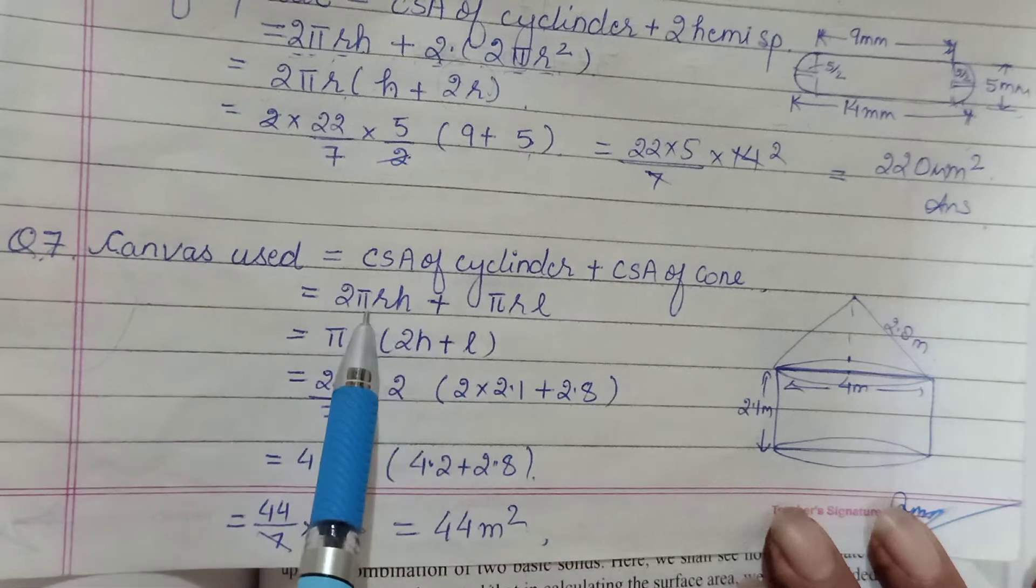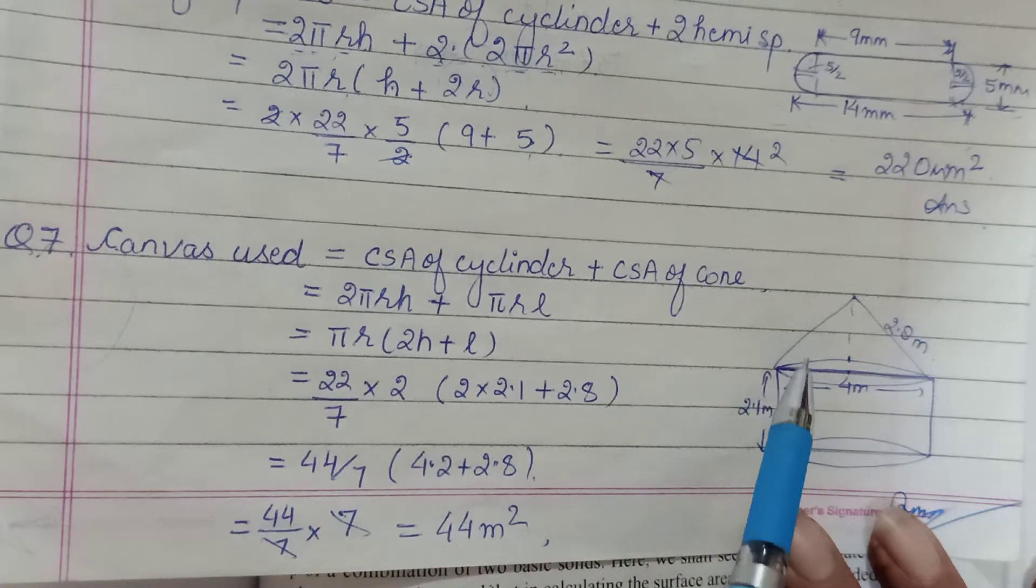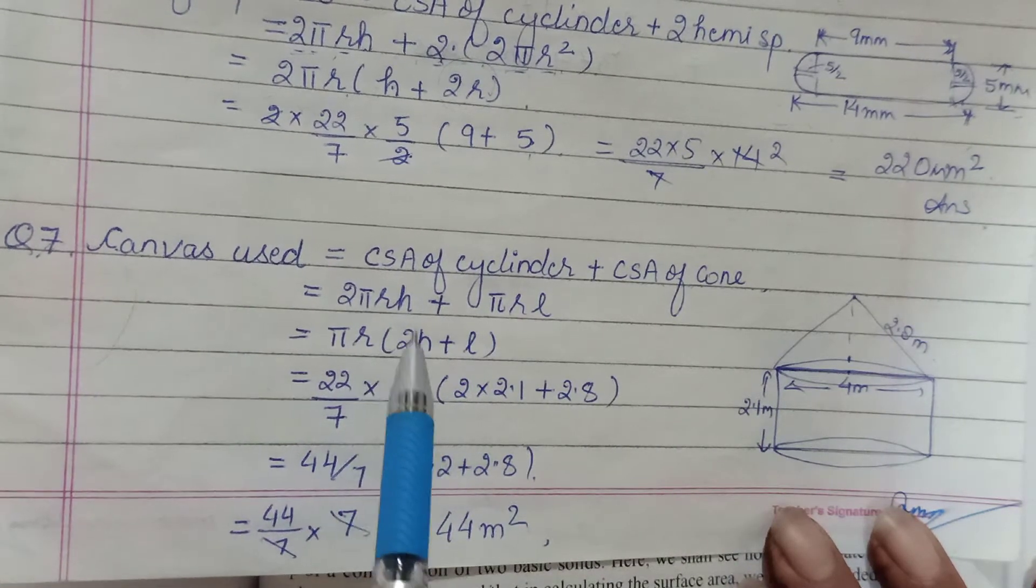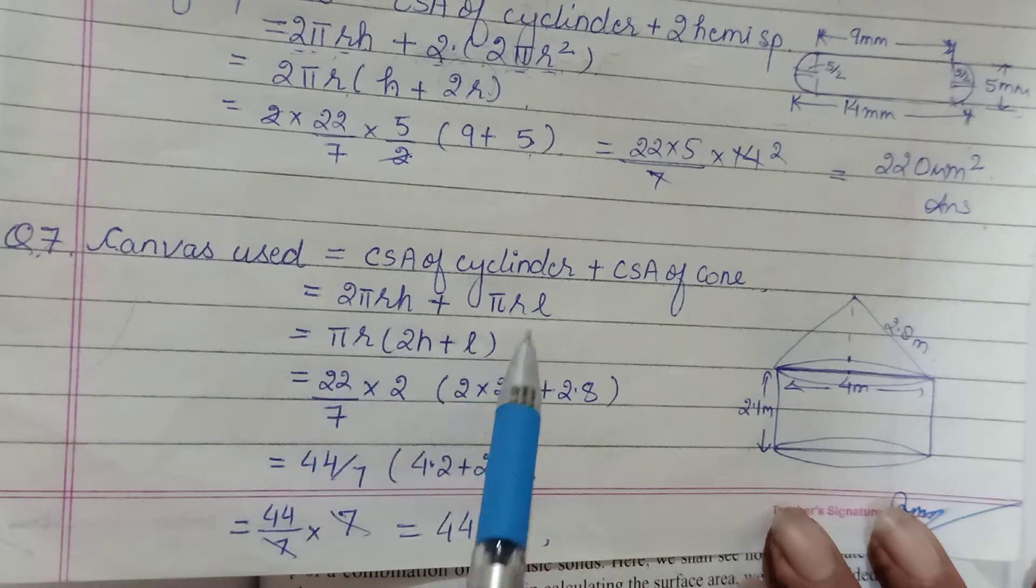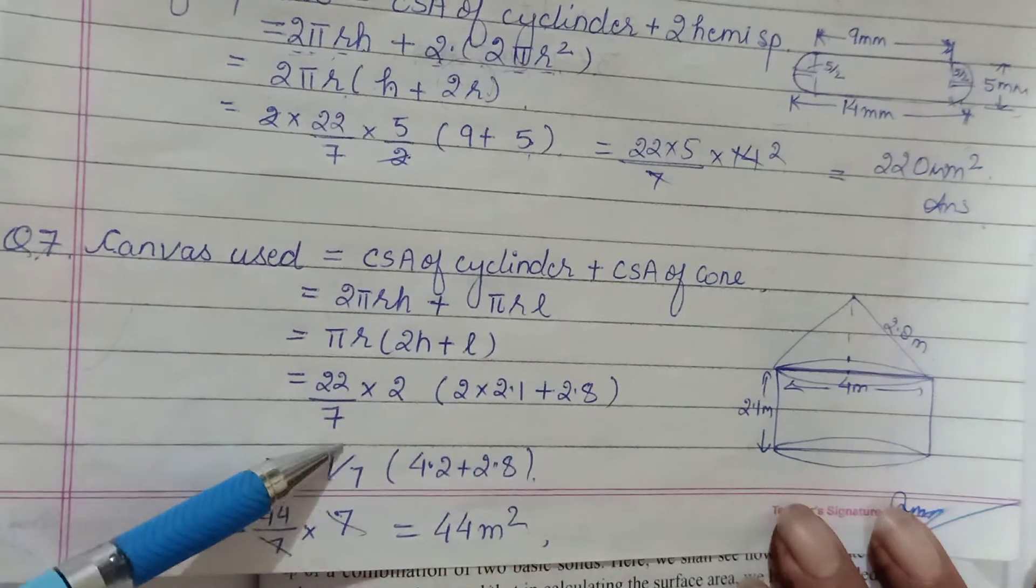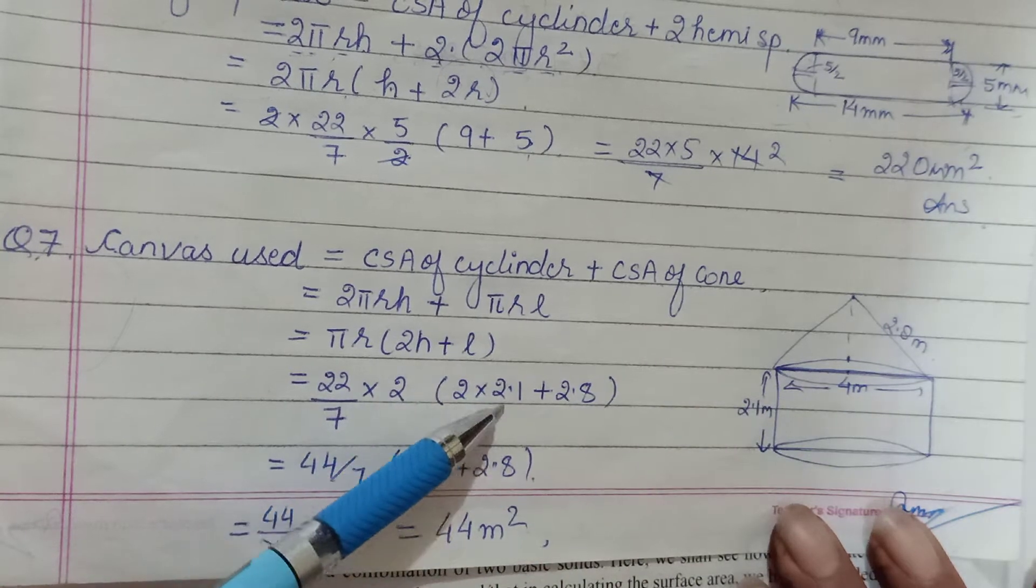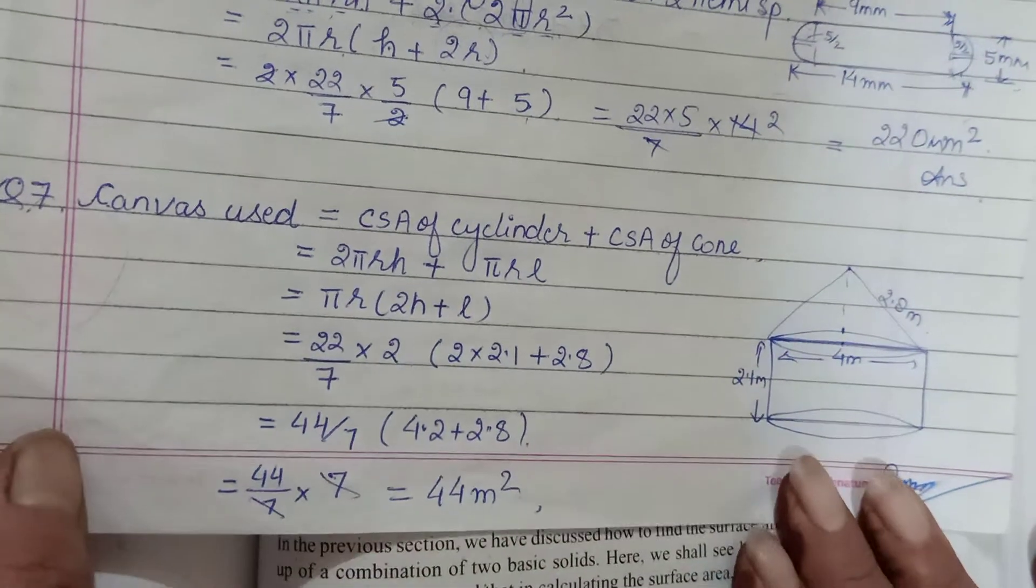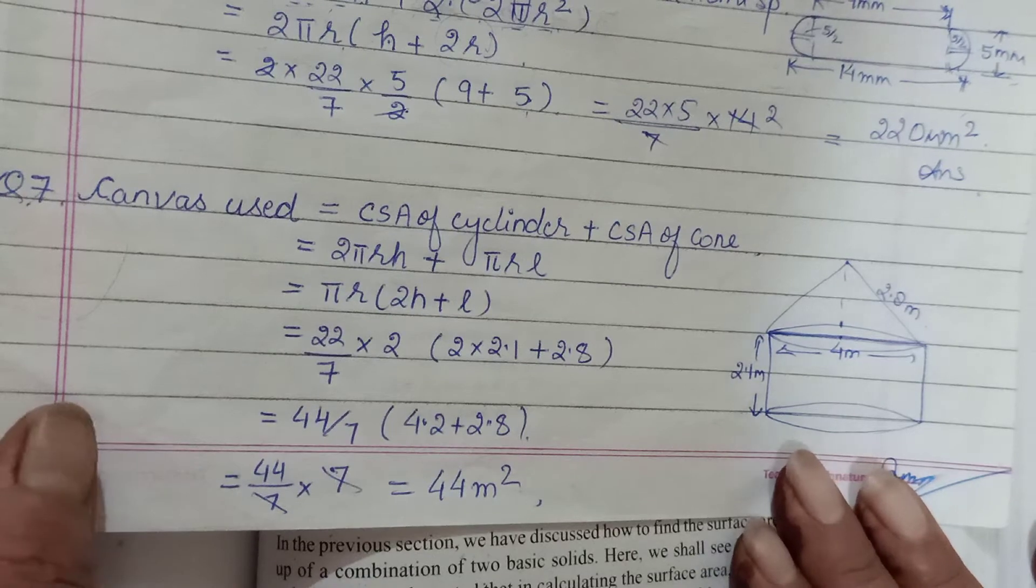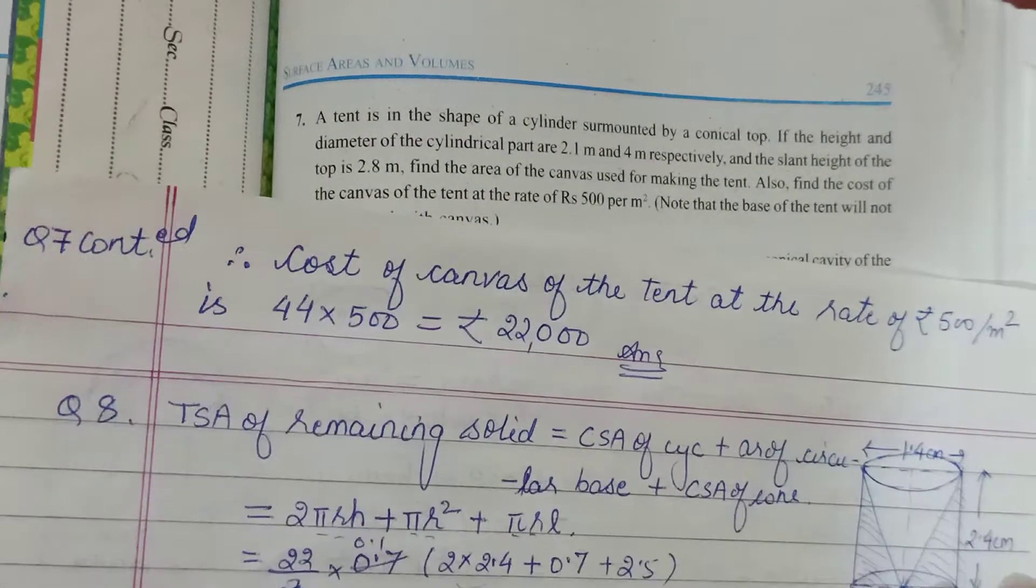Since π and r can be taken common - radius of both the figures was same - so you are left with 2h here and plus l here. Putting the values, radius would be 2, diameter 4 given. The calculation, try on your own and finish it off. So this was only regarding the area.